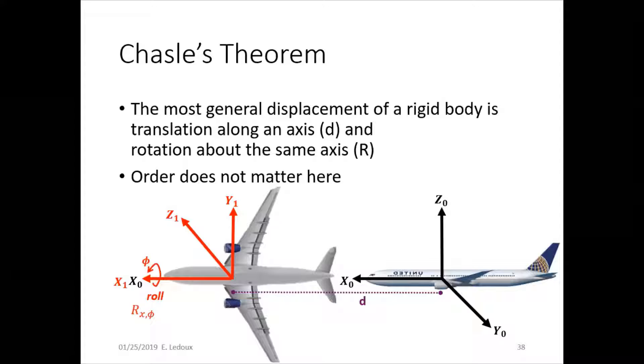Chasle's theorem says the most general displacement of a rigid body is translation along an axis and rotation around the same axis. So slide, rotate. Slide in a certain direction, rotate around that direction axis. Order does not matter, so you could slide then rotate or rotate then slide. Either way you get the same result.